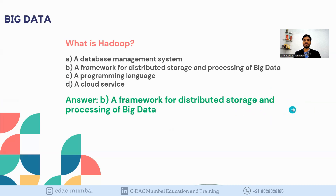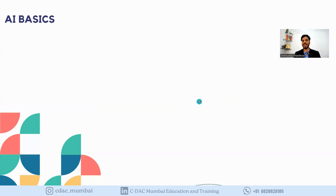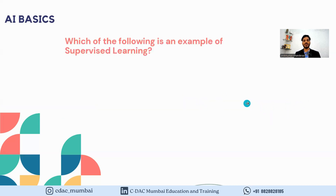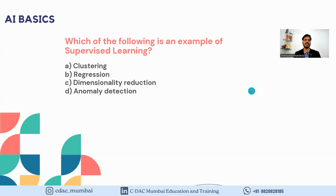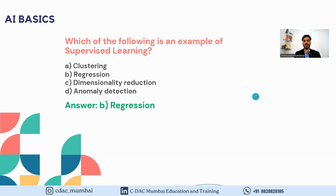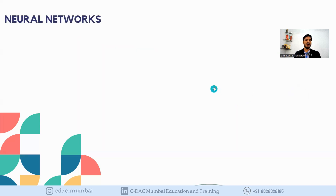Now we have a question on AI basics: which of the following is an example of supervised learning? The options are: A) Clustering, B) Regression, C) Dimensionality reduction, D) Anomaly detection. The answer is B — regression is an example of supervised learning.